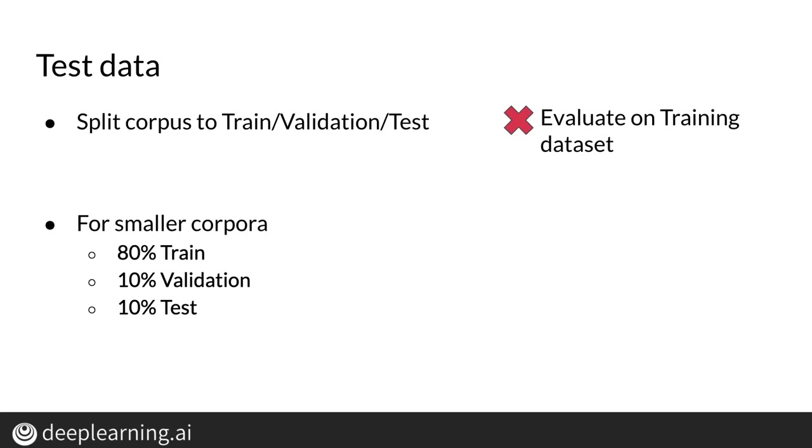The training set is used to train your model, the validation set is used for things like tuning hyperparameters, and the test set is held out for the end, where you test it once and get an accuracy score that reflects how well your model performs on unseen data.